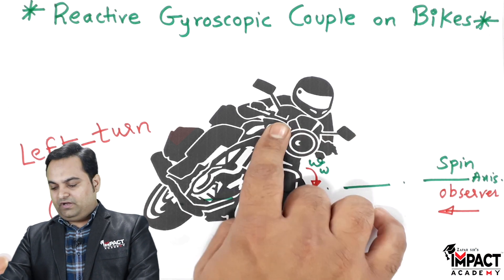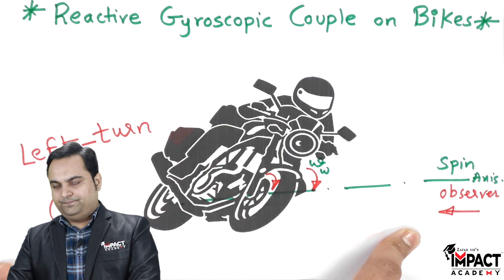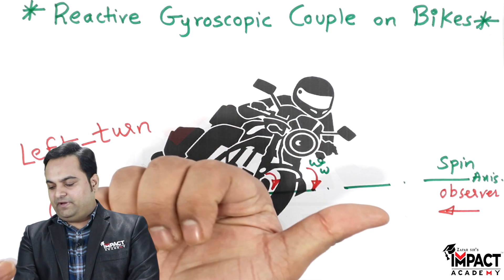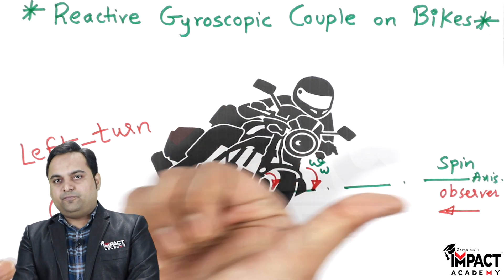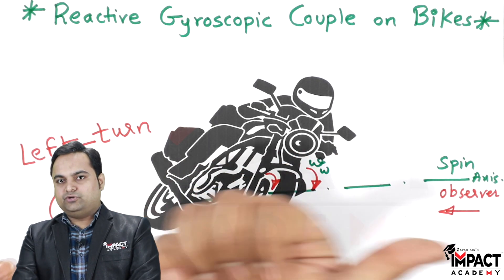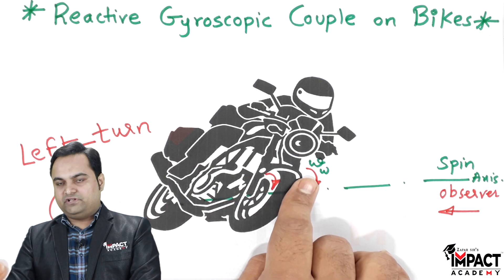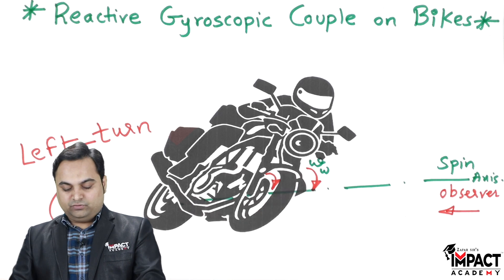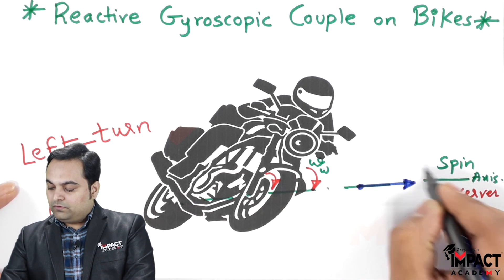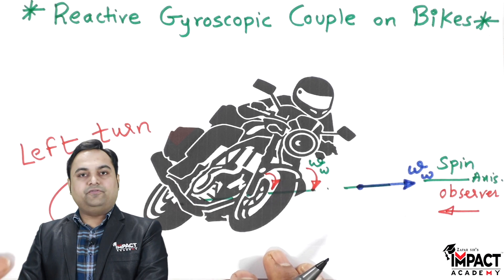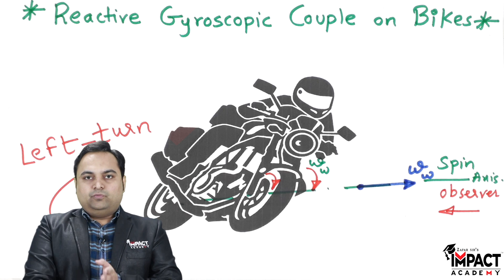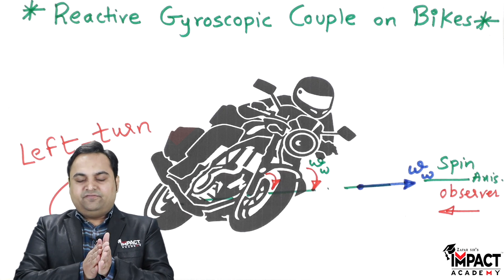As an observer, the rider is taking a left turn, and I have to curl the fingers in an anti-clockwise manner. The thumb points in a specific direction — this direction of the thumb shows the vector position of the angular velocity. This is the angular velocity vector.